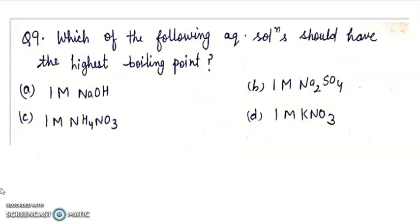Question 9: which of the following equal solution should have highest boiling point? 1 molar NaOH, 1 molar sodium sulfate, 1 molar ammonium nitrate, 1 molar KNO3. All concentrations are same. Whichever has higher i will have higher elevation in boiling point. i values are 2, 3, 2, 2. Answer is B because it has highest i.